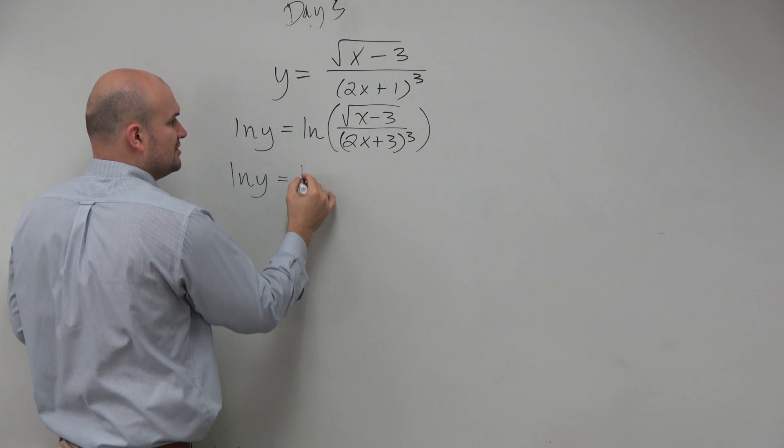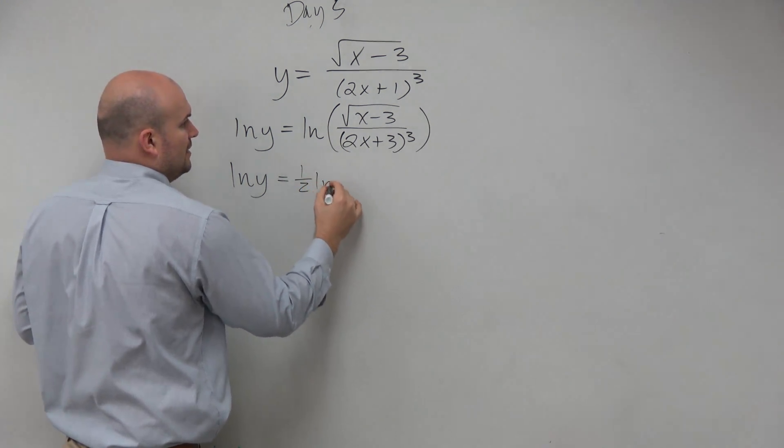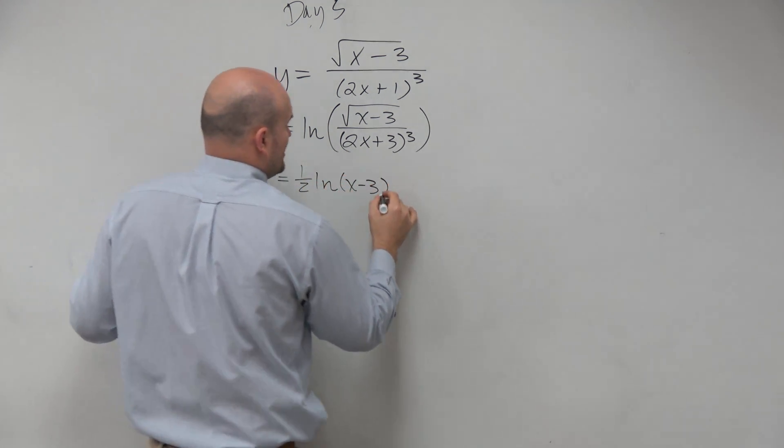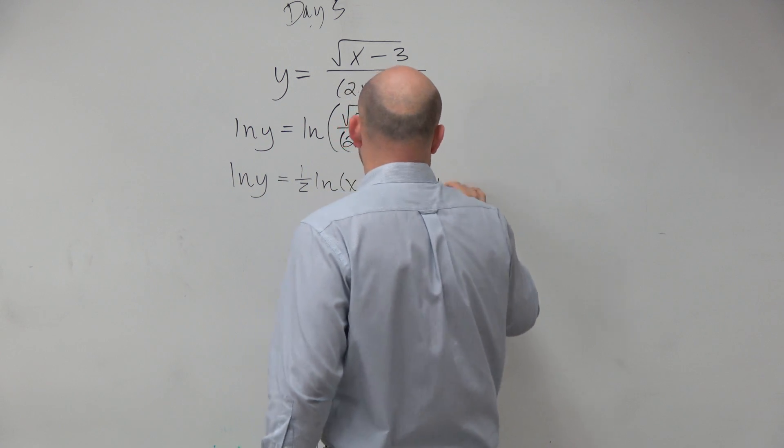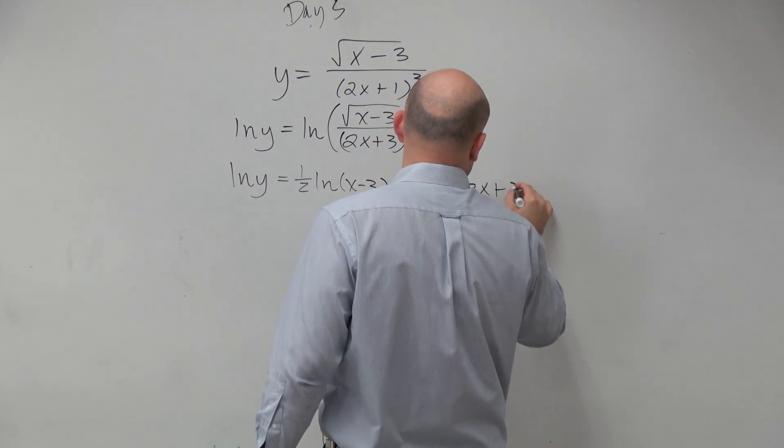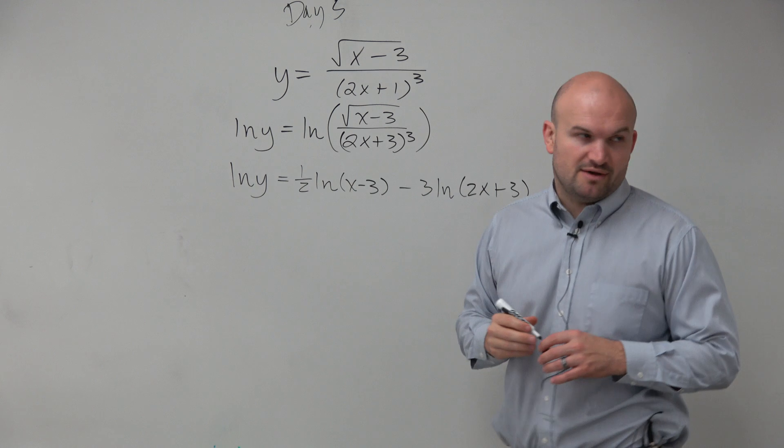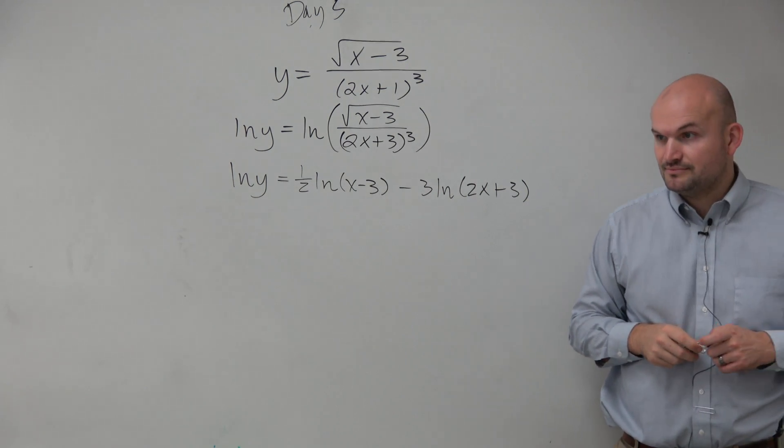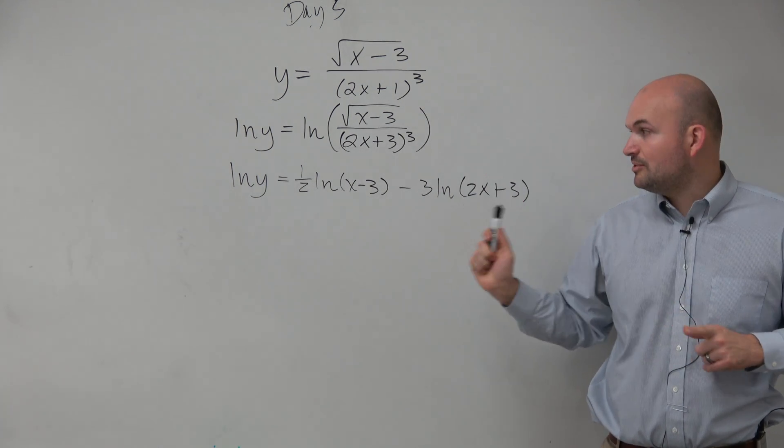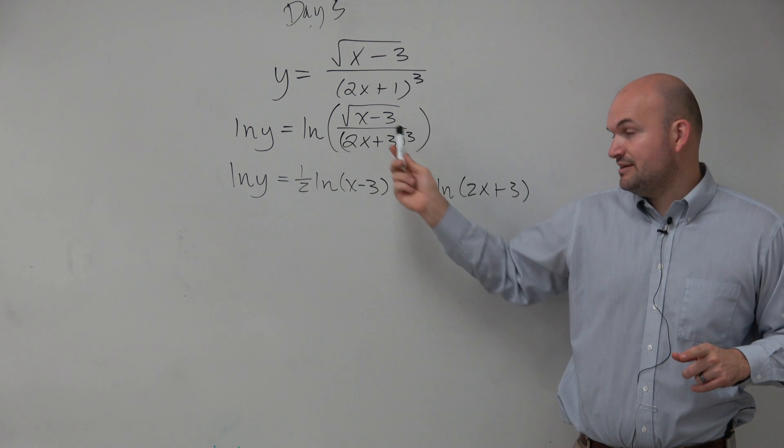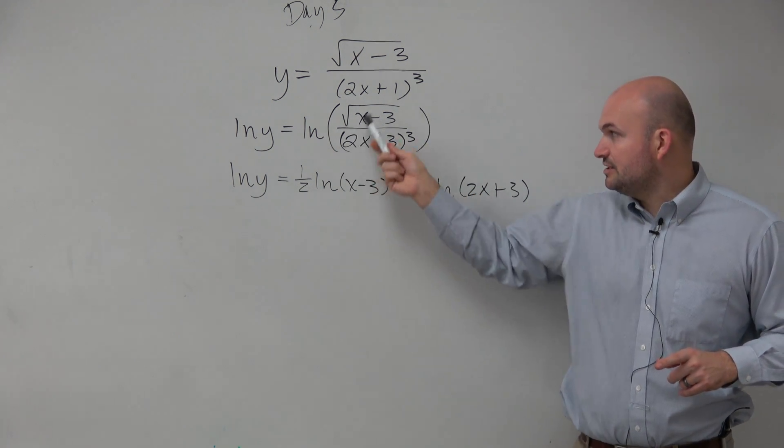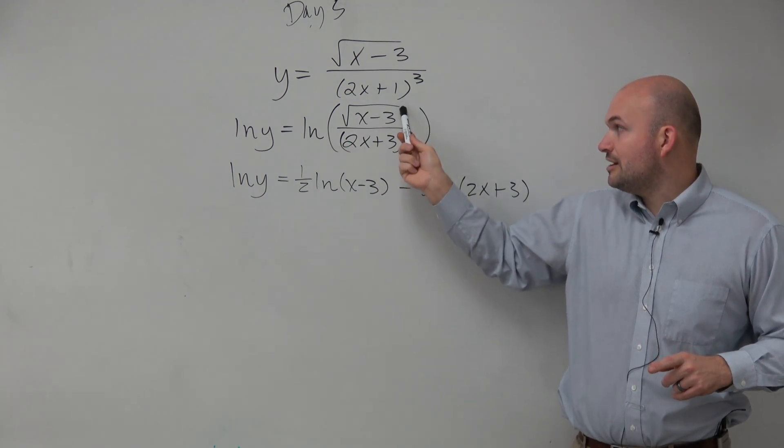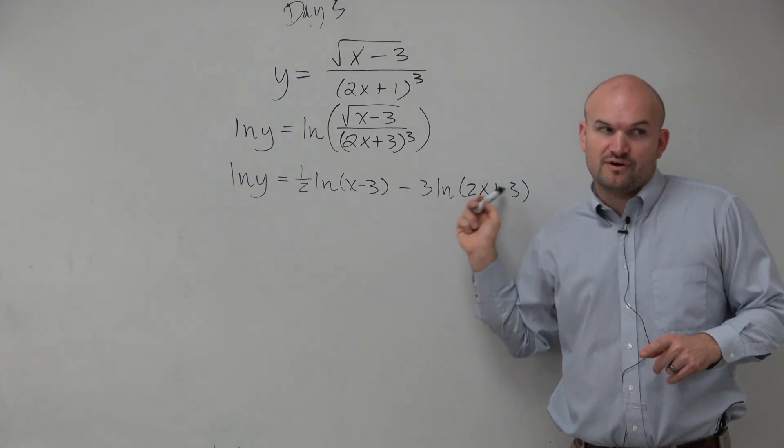So I understand that this is going to be a 1/2 ln(x-3) minus a 3 ln(2x+1)^3. Is everybody OK with my expansion of the logarithm? That's what we covered a couple of class periods ago. You can take the difference, the division by subtraction. You can rewrite your powers. That would be 1/2. And you always bring your powers out in front.